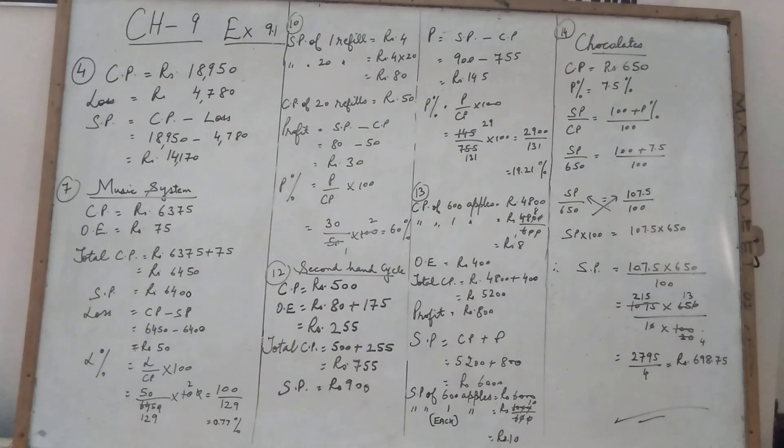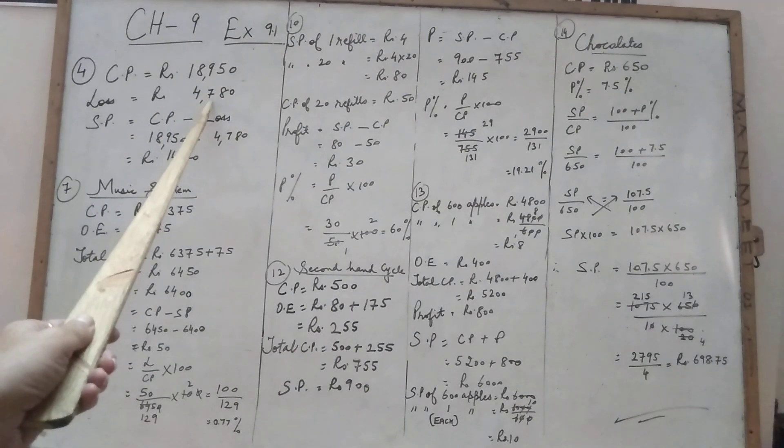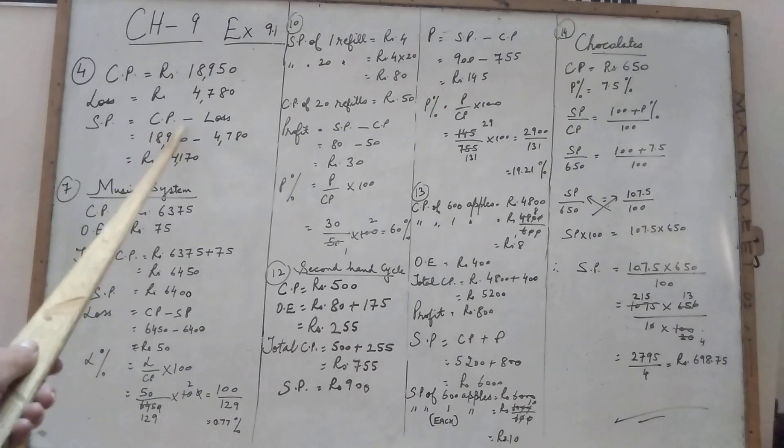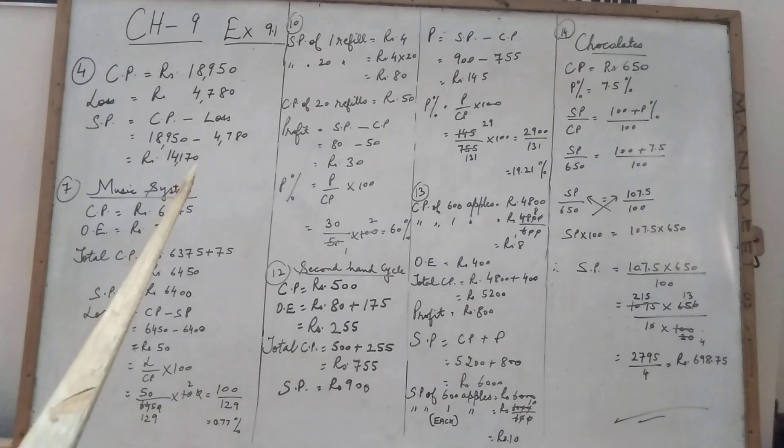See the book, cost price is given Rs. 18,950. Loss is given Rs. 4,780. Then selling price formula, first of all you have to apply the formula, cost price minus loss. Minus these two, you will get the answer Rs. 14,170.